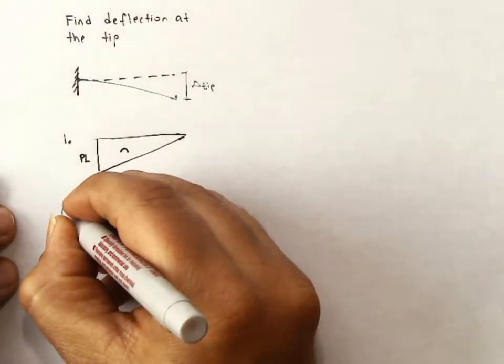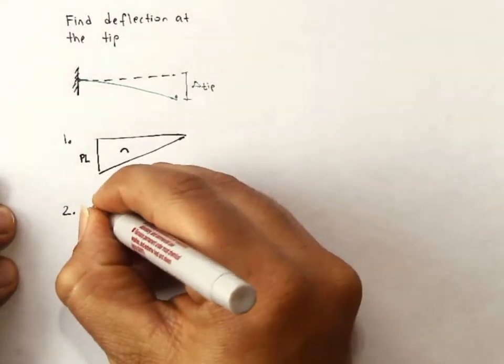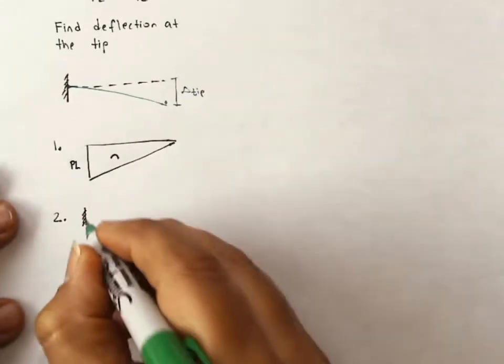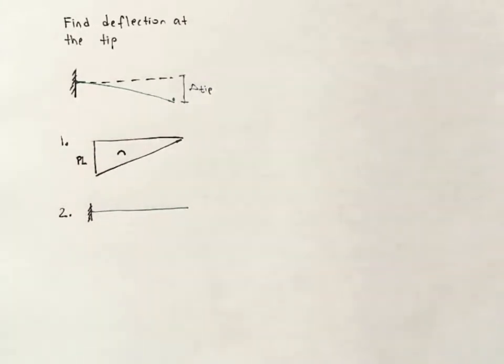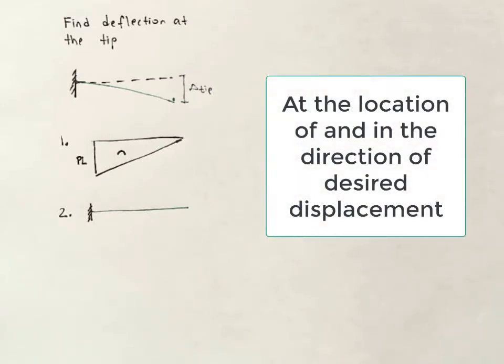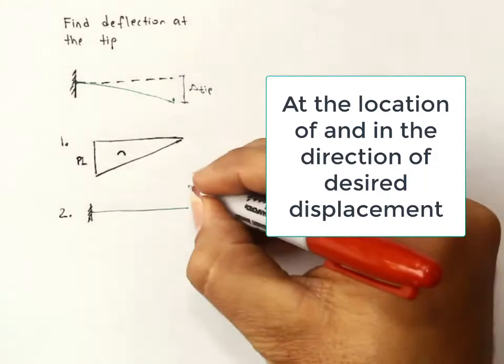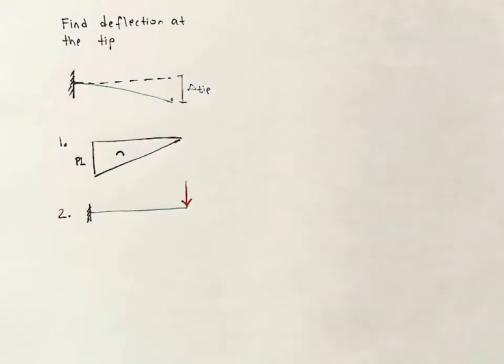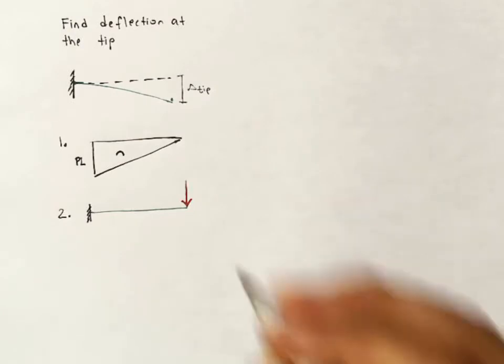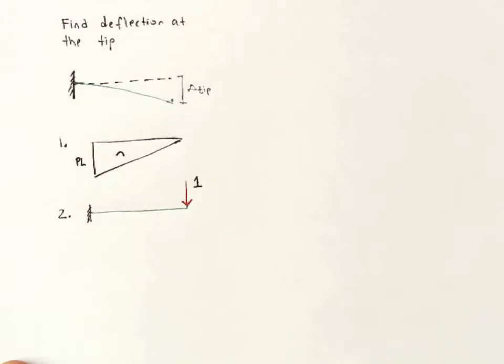Step two. In step two, we apply the virtual load. So I'll sketch my beam in here. And recall that we apply the virtual load, the unit load, at the location of and in the direction of desired displacement. So I want the displacement at the tip. I want the displacement downward. So I'll apply at the tip a downward force. In the virtual load method or the unit load method, this takes a magnitude of one.